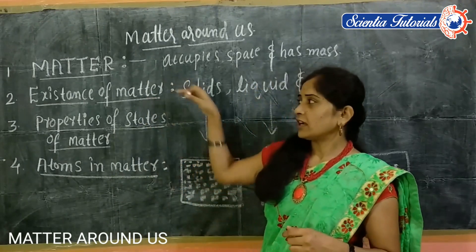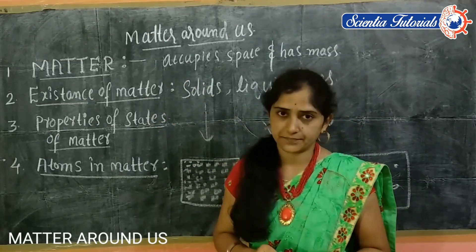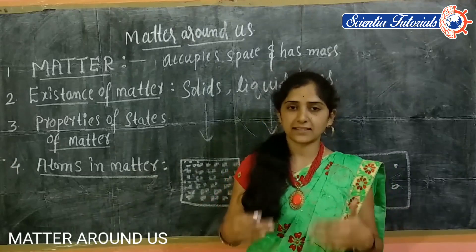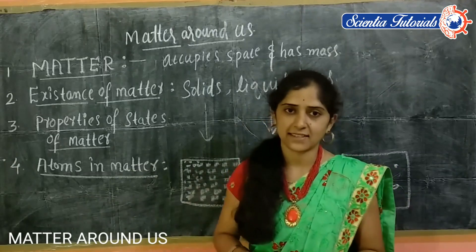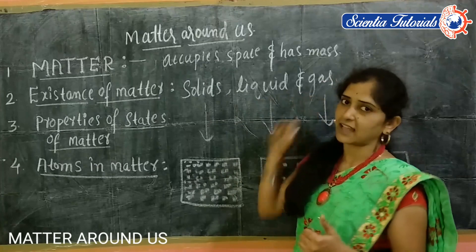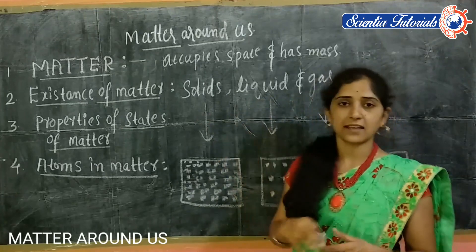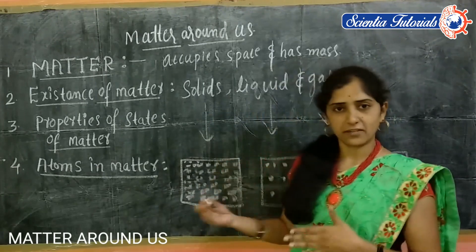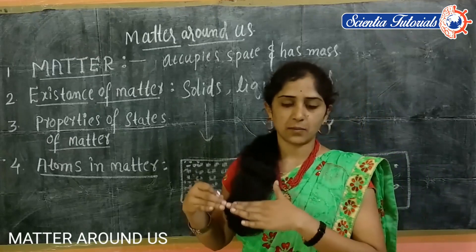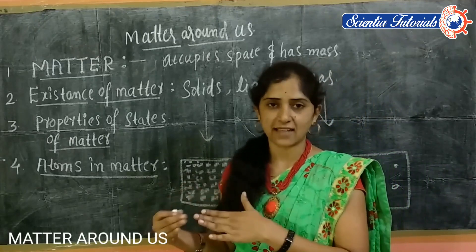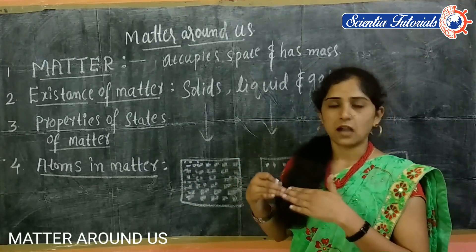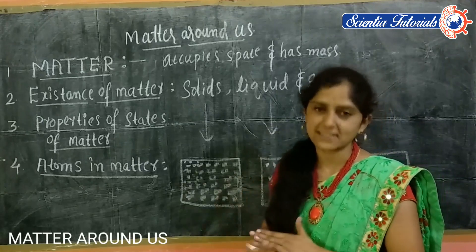So what is the existence of matter? According to the arrangement of atoms in the matter, matter exists in three physical states. Matter exists in three states: solids, liquids, and gaseous state. These states are interchangeable — solid to liquid, or liquid to gaseous state. So the existence of matter is in three states: solids, liquids, and gases. Now, how can we express the atom arrangement in solids, liquids, and gases? Let me first look at the properties of solids, liquids, and gases.